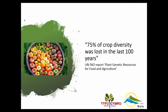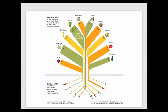This diagram illustrates the loss specifically for American seed companies. The top of the tree represents 1903, analyzing commercial seed houses and the varieties they offered. For example, with peas there were 408 different varieties in 1903. When analyzed again 80 years later in 1983, the diversity of varieties offered had completely shrunk — illustrating the rate at which we've been losing crop diversity over the last 100 years.